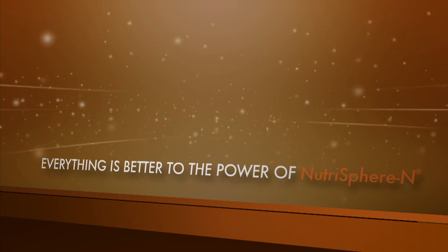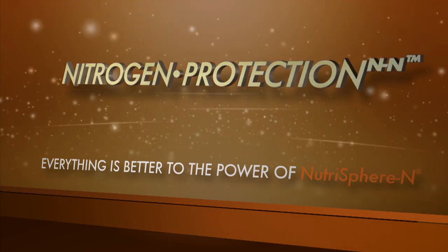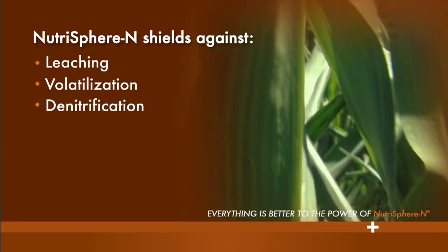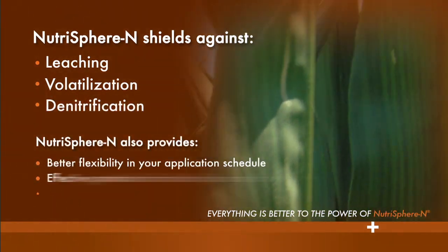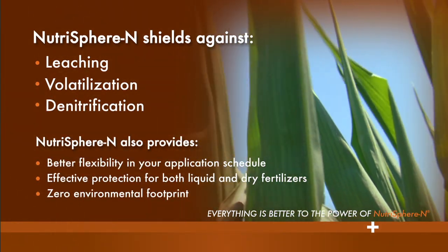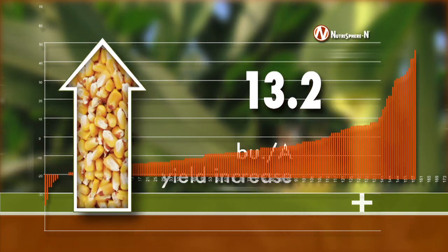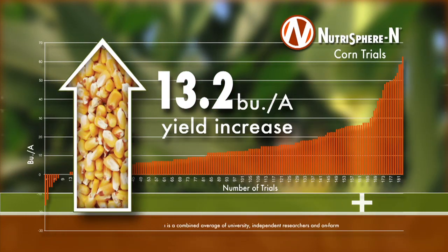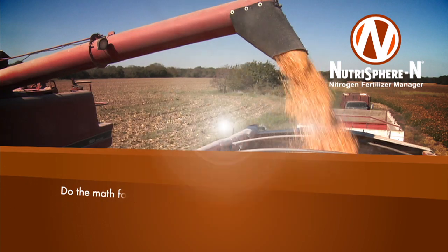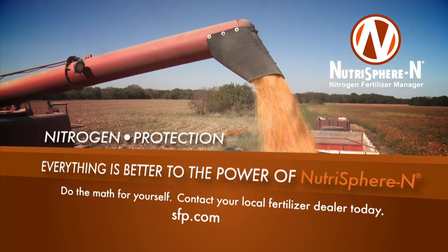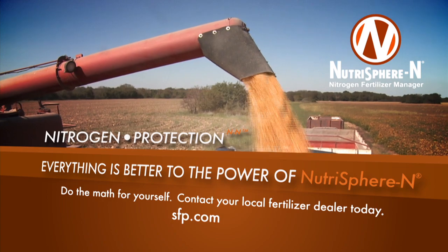Nutrisphere-N Nitrogen Fertilizer Manager helps you maximize the efficiency of your nitrogen applications, protecting yield against leaching, volatilization, and denitrification. Research shows that in 184 corn trials, Nutrisphere-N increases yields by an average of 13.2 bushels per acre. Do the math for yourself — contact your local fertilizer dealer today and take your operation to the power of Nutrisphere-N.